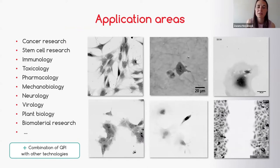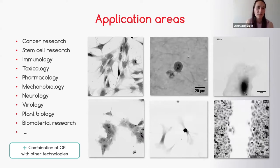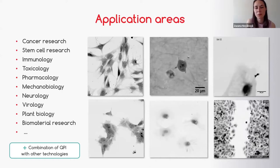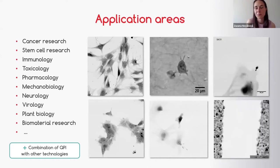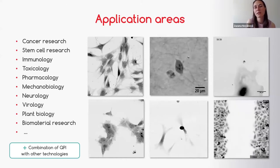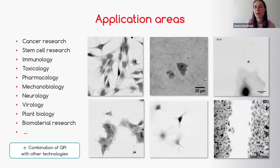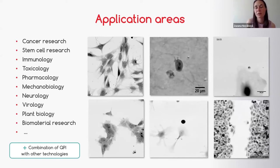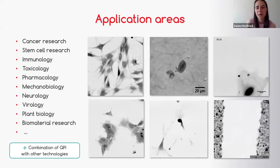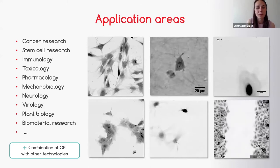Since cell dry mass is a sensitive parameter of cell viability and cell health in general, this technology is good to be applied in pharmacology research. It also has great potential when you combine QPI with other techniques — for example, it can be easily combined with fluorescent imaging, so you can still get nice QPI data and then visualize some specific labeled structures inside your cells.